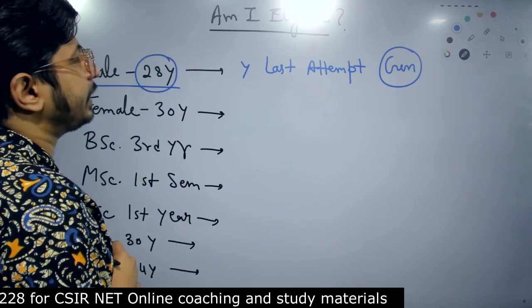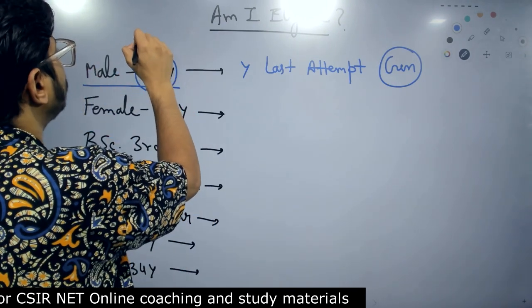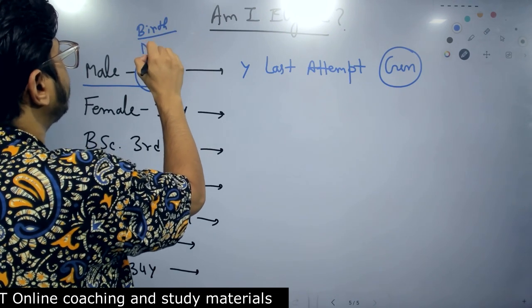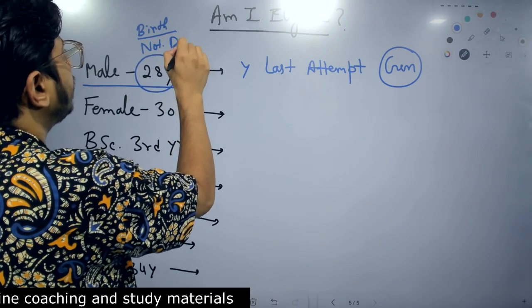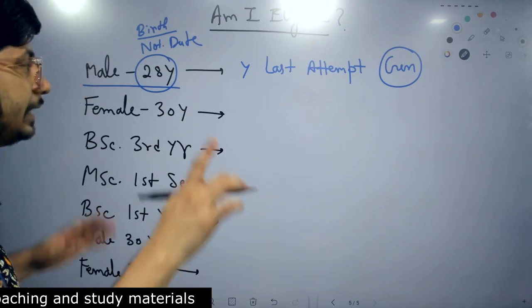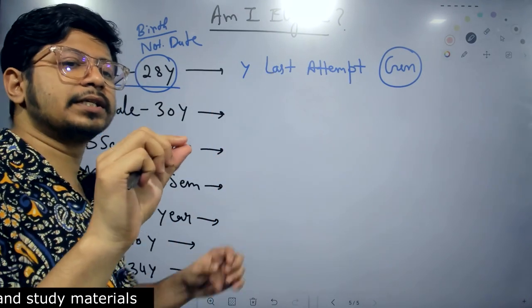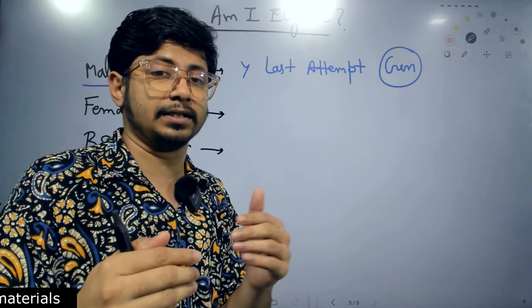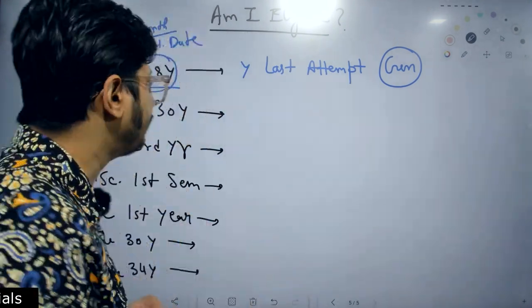And your year or 28 years of age will be calculated from your birth till the form notification date. So remember to count this properly. In the notification, they clearly mention the date till which, from your birth, they will consider as your age limit.